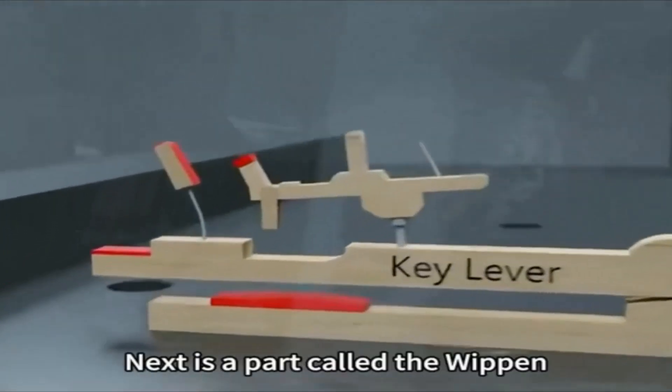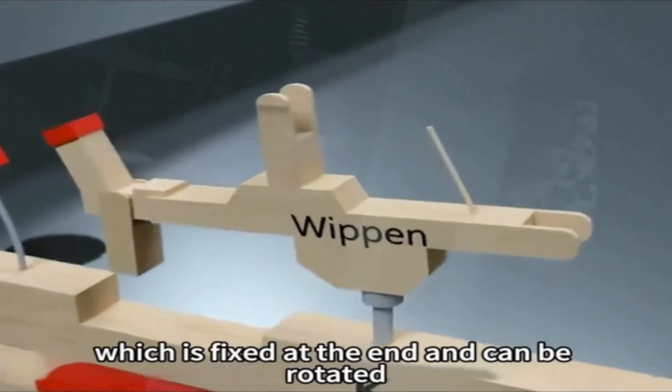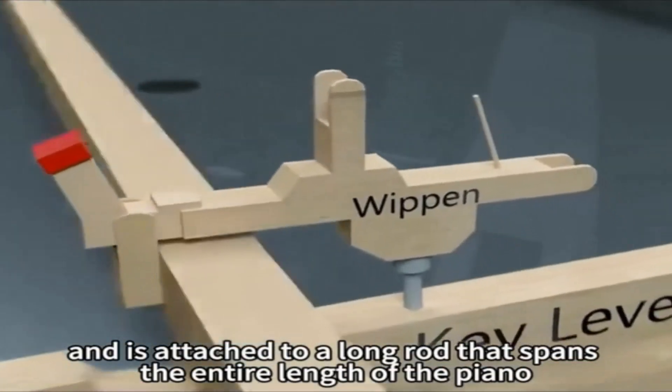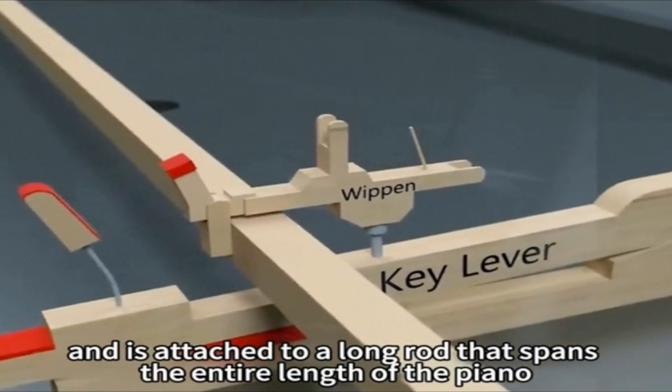Pressing the key causes the lever to move up and down, just like a seesaw. Next is a part called the whippen, which is fixed at the end and can be rotated, and is attached to a long rod that spans the entire length of the piano.